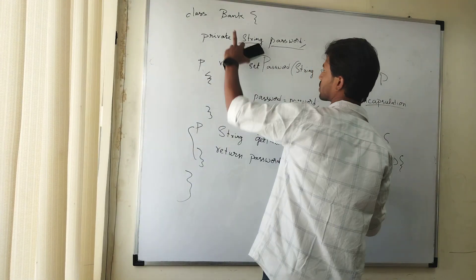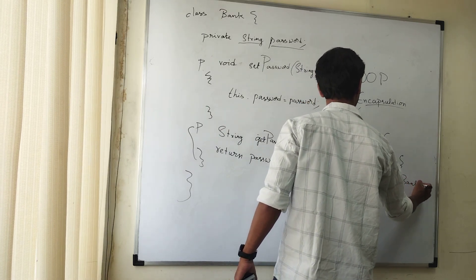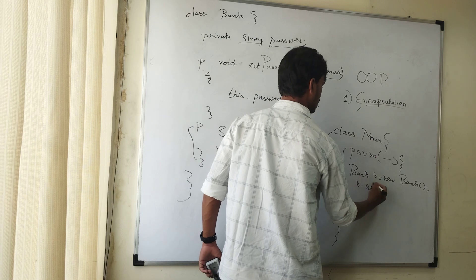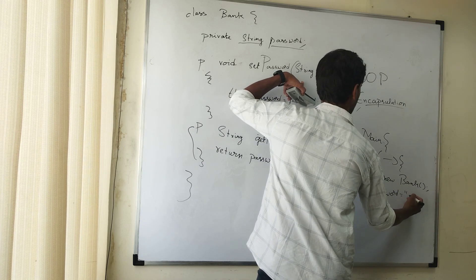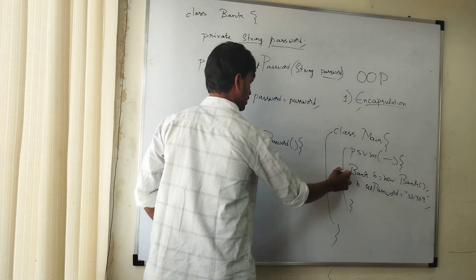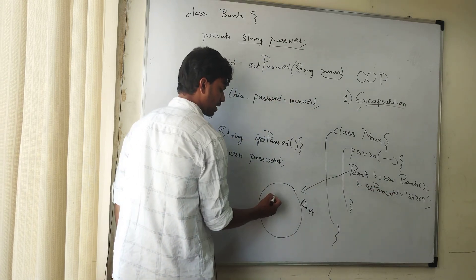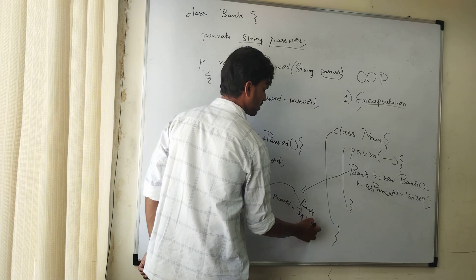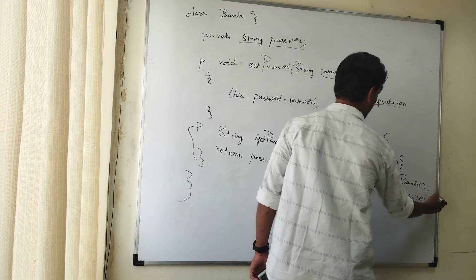This is how we define the encapsulation principle. We will be declaring other variables similarly, and for all variables we will be writing getter and setter methods — two methods per variable to either update or retrieve the value. We access the object by creating: Bank b = new Bank().